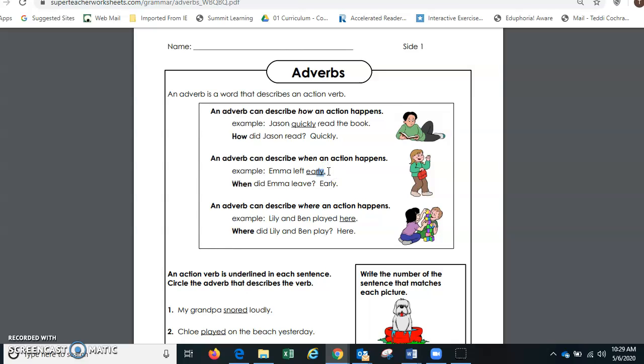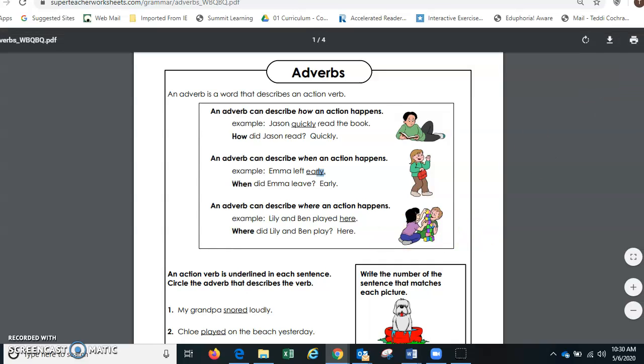The ly is very important. Remember it shows us that it's going to be an adverb. So an adverb can describe where an action happens as well. Where did Lily and Ben play? They played here. Where did the birds fly? In the sky, over the park.